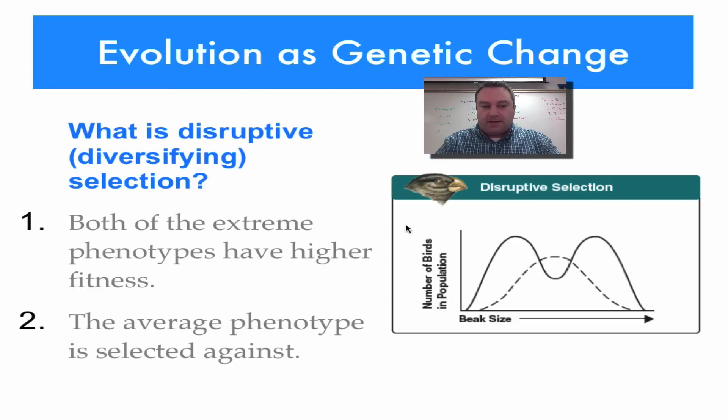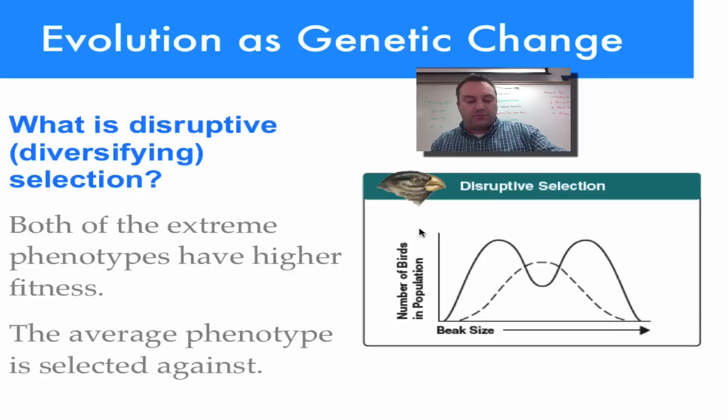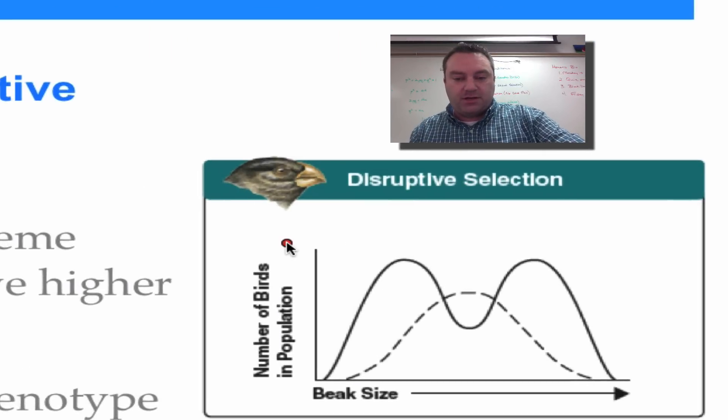Alright, disruptive selection. This one doesn't happen as much in nature as you would think, but it can occur. In this case, both extreme phenotypes have the advantage. So over here, we have another of Darwin's birds, Darwin's finches. And in this case, this average-sized beak, it doesn't have the competitive advantage.